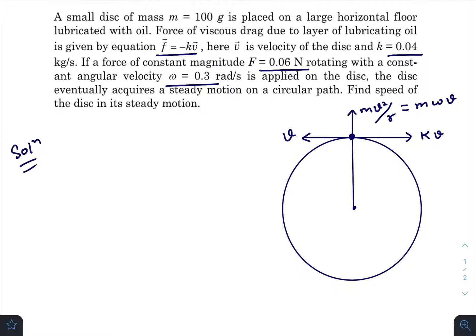For this circular motion, while standing on the mass, the resultant of these two forces—the centrifugal and the frictional force—must balance the external capital F. So F squared must equal M omega V whole squared plus KV whole squared.